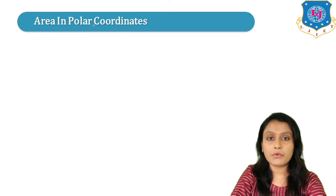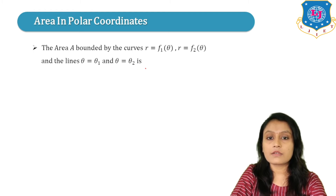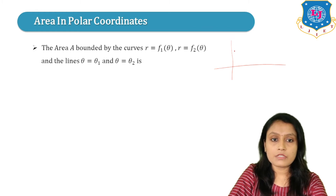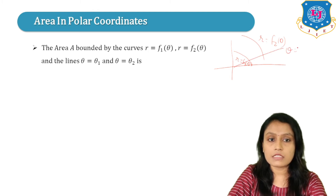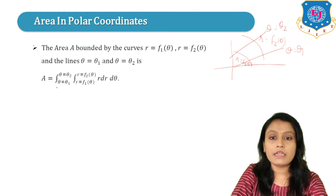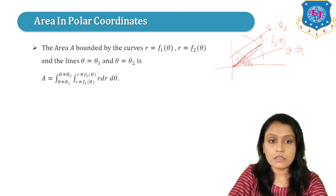Now we will study area in polar coordinates. The area A is bounded by the curves R = F1(θ) and R = F2(θ), and the lines θ = θ₁ and θ = θ₂. We have curve R = F1(θ), another curve R = F2(θ), and the two lines θ = θ₁ and θ = θ₂. The integration is given by area equals double integration, θ₁ to θ₂ for θ. We draw an elementary radius vector.